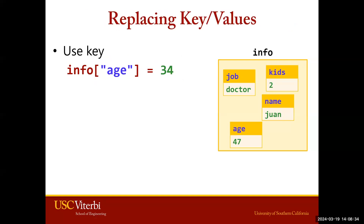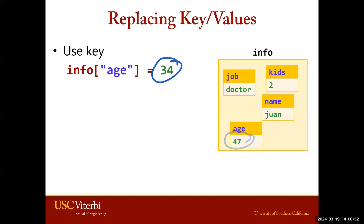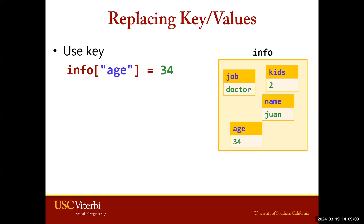We can also replace and update key-value pairs using the same method. This time we're going to use an existing key within the brackets. Age is already a key within our info dictionary, and we want to replace the value of 47 with 34. We just set it equal to 34 and when we run this, the value will update to 34. Note that when you're adding, the key will be unique, and when you're replacing, you'll be using an existing key.